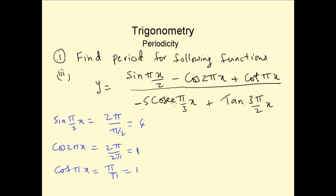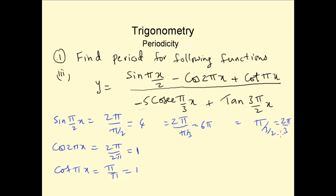So the period for csc(πx/3) is 2π ÷ (π/3) = 6. For tan(3πx/2), the period is π/n = π/(3π/2) = 2/3. So now we have the individual periods: 4, 1, 1, 6, and 2/3.